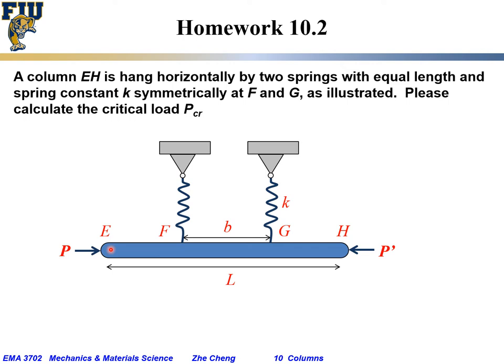For Homework 10.2, a horizontal column EH is hung horizontally by two springs — one at F and one at G — with equal length and the same spring constant K, positioned symmetrically. The distance from F to E equals the distance from G to H. We apply force P from the left and P from the right with the same magnitude along the same axis, and we want to calculate the critical load.